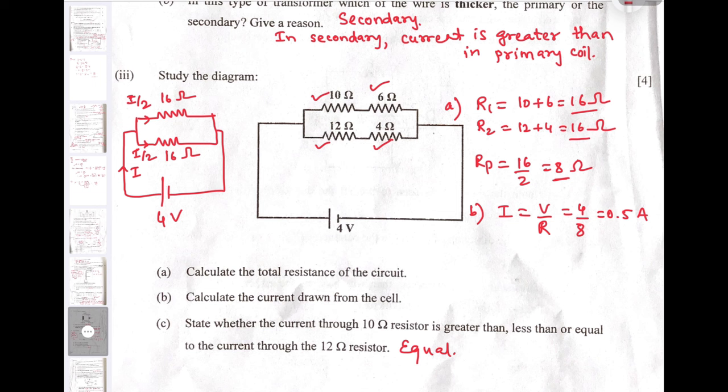Once we get the total resistance of the circuit, we can easily find the current drawn from the cell, that is 0.5 Ampere. State whether the current through 10 Ohm resistor is greater than, less than or equal to the current through 12 Ohm resistor. I have drawn the equivalent circuit diagram here. You can see that two 16 Ohm resistors are connected in parallel. So whatever current comes from the cell, that current will divide equally into two parts. Half of the current will flow through upper branch and remaining half will flow through lower branch. So the current flowing through 10 Ohm and 12 Ohm will be same, that is 0.25 Ampere each.